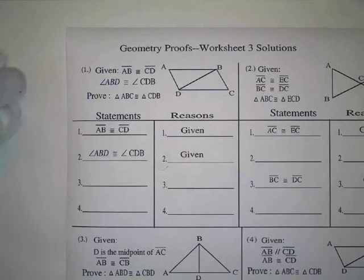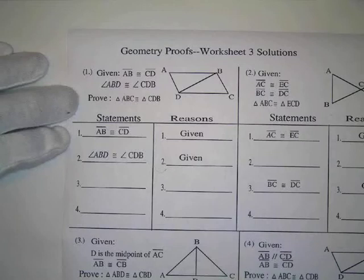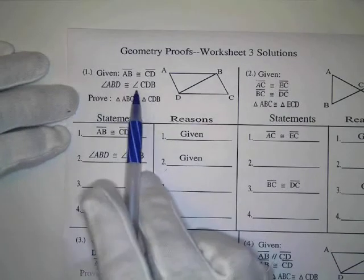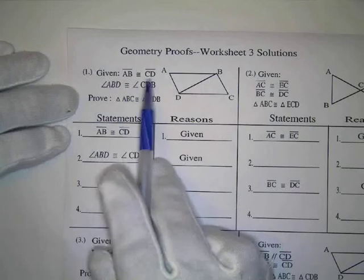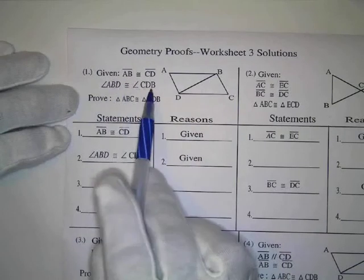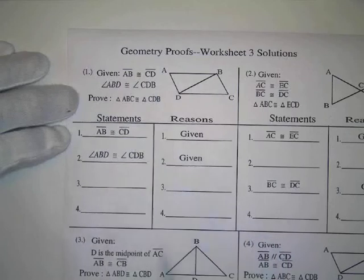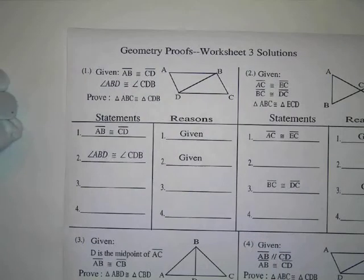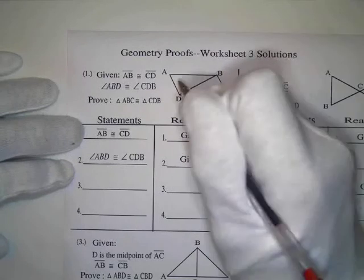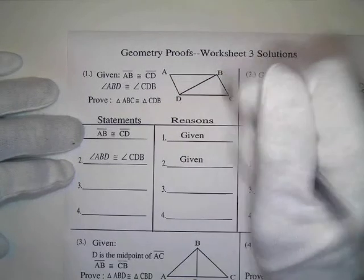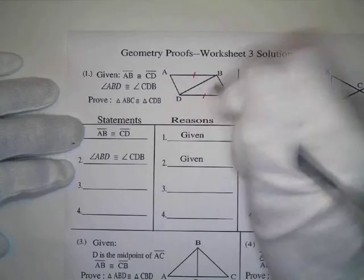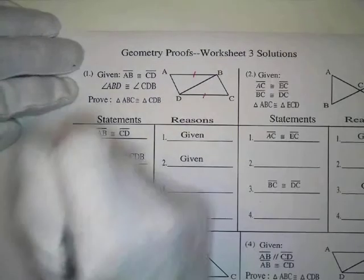Here is what you need to write out. AB is congruent to CD, so I wrote that was given. Angle ABD is congruent to CDB, and that's given. I'm going to mark those on my picture. AB is congruent to CD, so I'll put one mark there and one mark there, and that's a side.